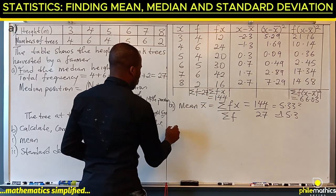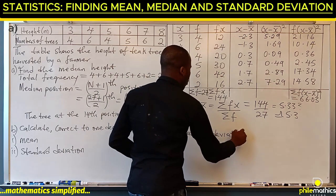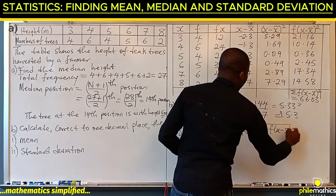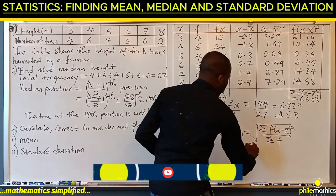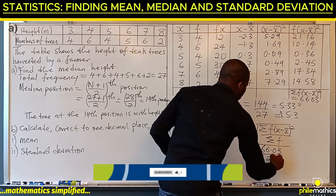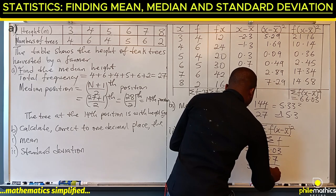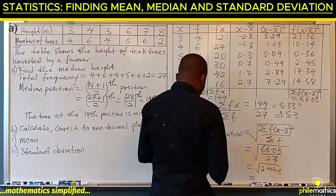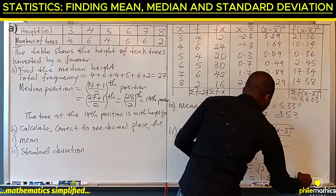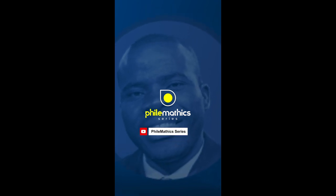The standard deviation is given by the formula: square root of the summation of f(x minus x-bar) squared over summation of f. That is the square root of 66.03 over 27, which is the square root of 2.445. Taking the square root gives us 1.563, approximately 1.6.